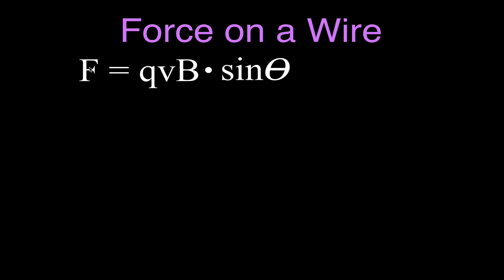We can derive the equation for the magnitude of the force on a wire from this equation, because we know that V is the velocity, and the velocity is the distance divided by the time. So we have Q, V, B — charge, velocity, and magnetic field. V is velocity, and that's the distance divided by the time. This is the distance that the charges would be going; since we're talking about a wire now, it's actually the length of the wire. And this is the time that it would take for those charges to go through that length of wire, and we're going to substitute that into this equation.